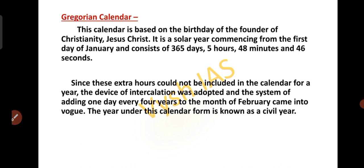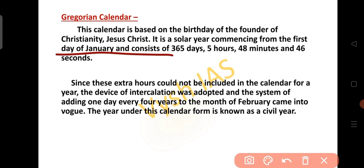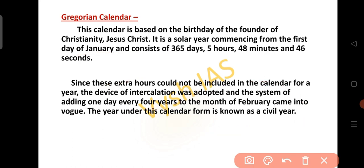The Gregorian calendar is mainly based on the birthday of the founder of Christianity, that is Jesus Christ. It is a solar year commencing from the 1st day of January and consists of 365 days, 5 hours, 48 minutes and 46 seconds. The extra hours could not be included each year, so the device of intercalation was adapted — the system of adding 1 day every 4 years to the month of February came into work. The year under this calendar is known as the civil year.